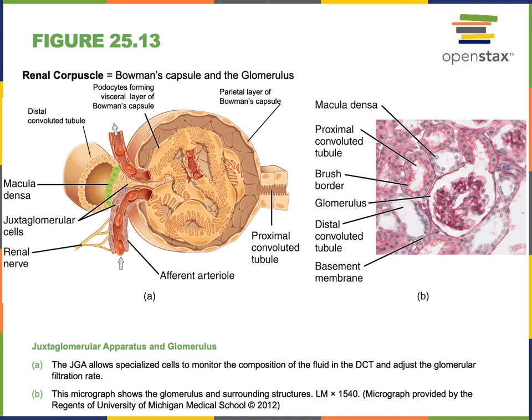The afferent arteriole has a thick smooth muscle layer, which is important for contracting to regulate the flow of blood into the glomerulus and control the glomerular filtration rate — how fast liquid enters the nephron. If the afferent arteriole relaxes and dilates, more blood flows into the glomerulus and more liquid is filtered. Conversely, if the afferent arteriole contracts, this vasoconstriction decreases blood flow into the glomerulus and decreases the glomerular filtration rate.